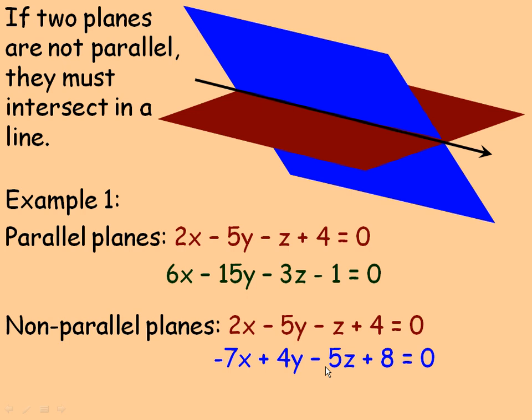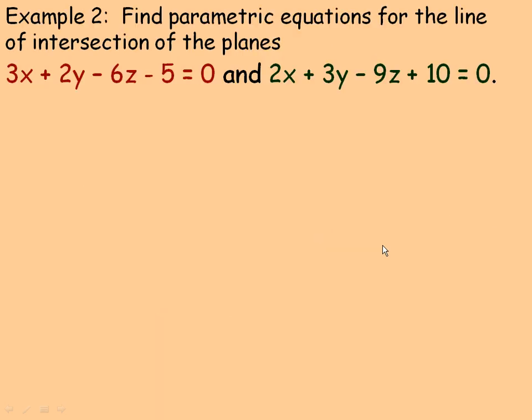Another example of planes that intersect in a line are a wall and the ceiling, or a wall and the floor of a room — they intersect along a line where the two meet, or at the top of the wall where it hits the ceiling. That's the line of intersection. So those are all the ways that two planes can exist in three-dimensional space, unless they're exactly the same plane — coincident — as discussed earlier.